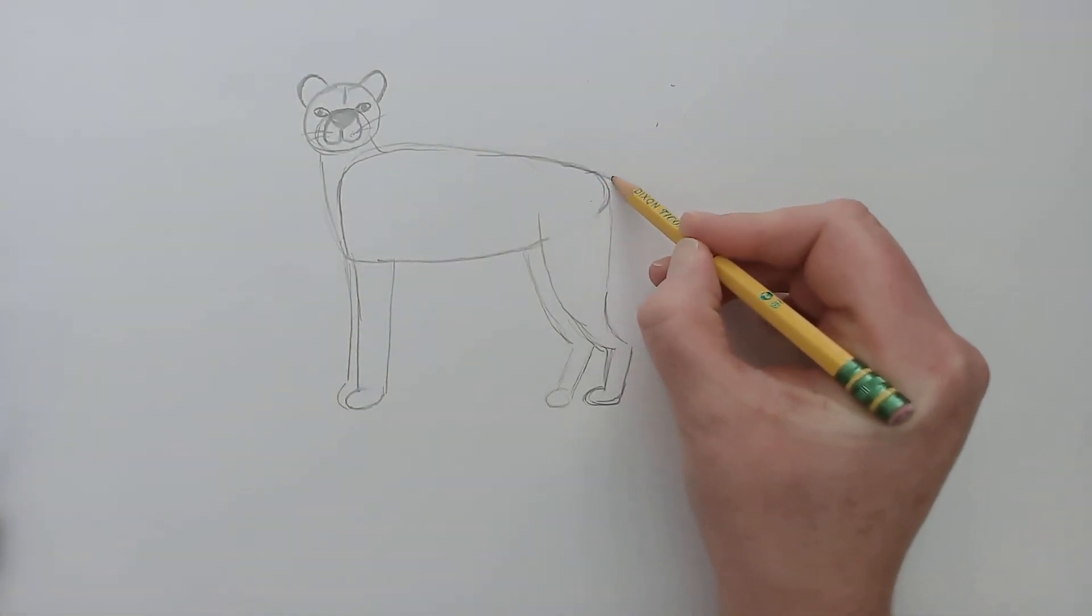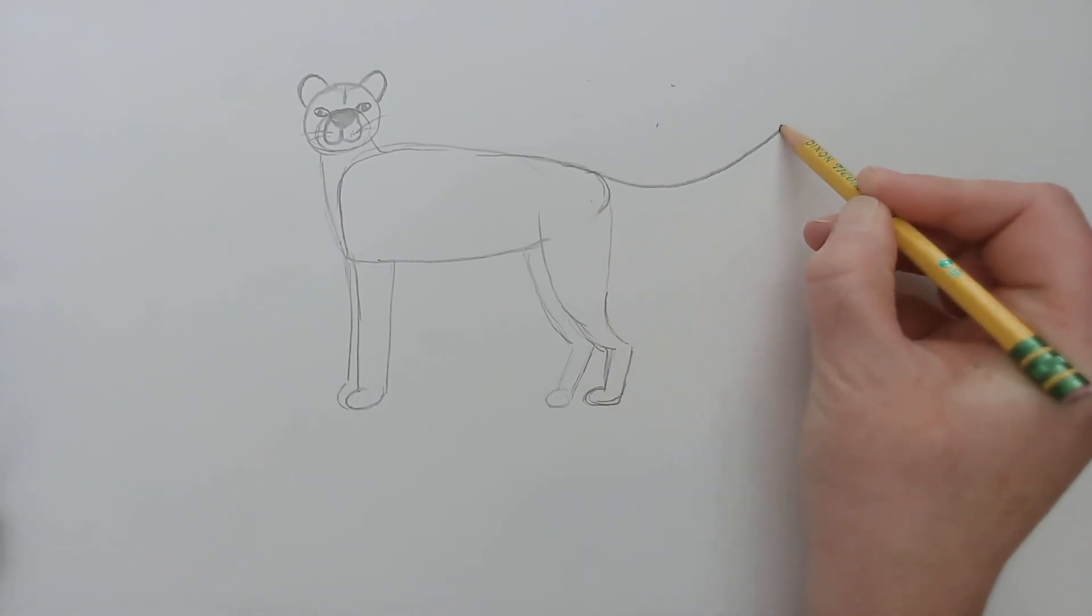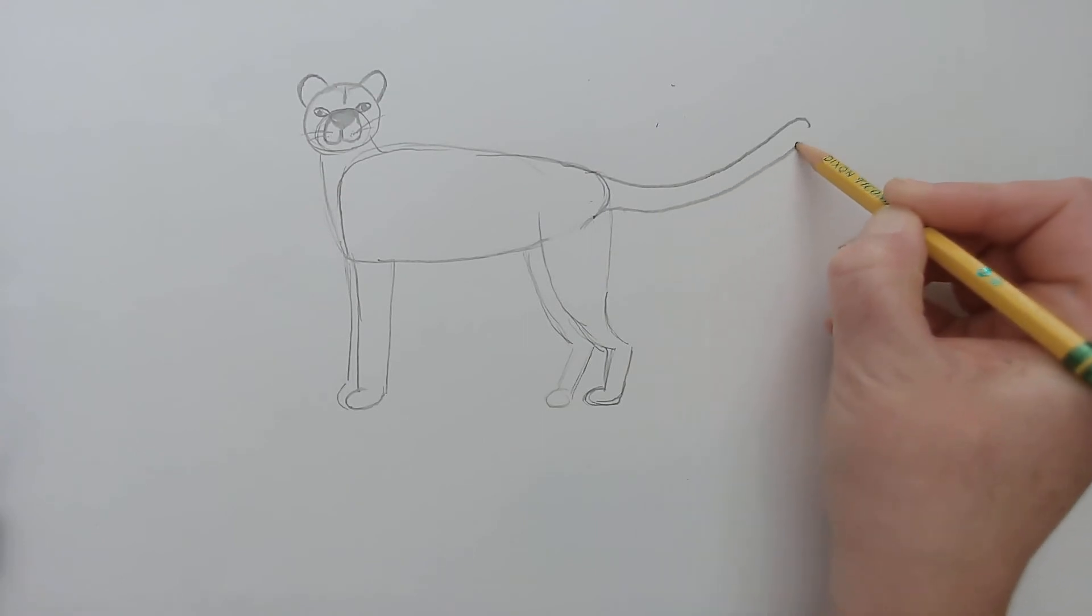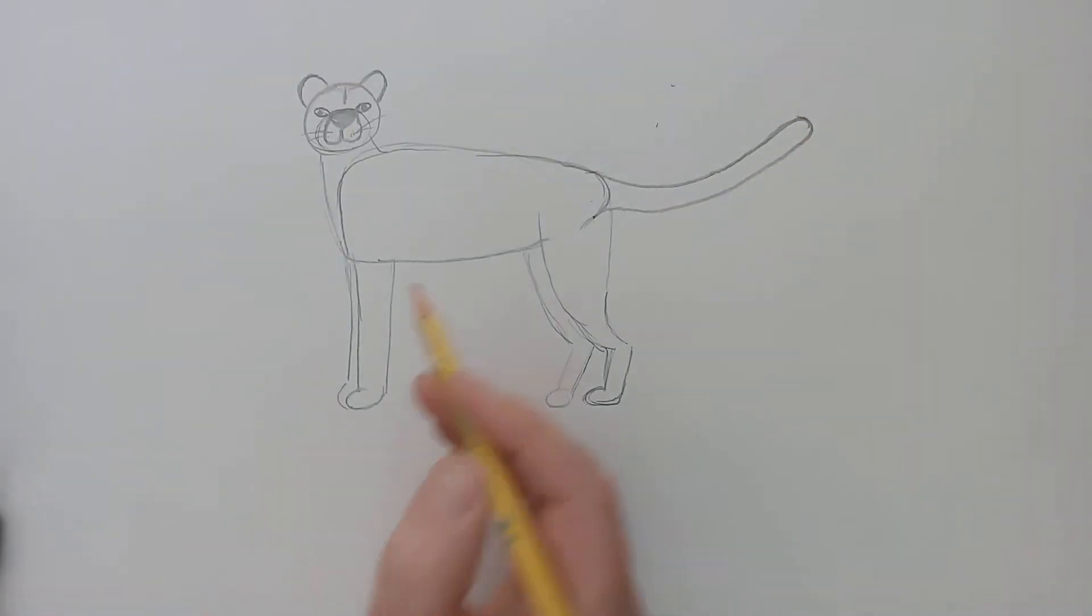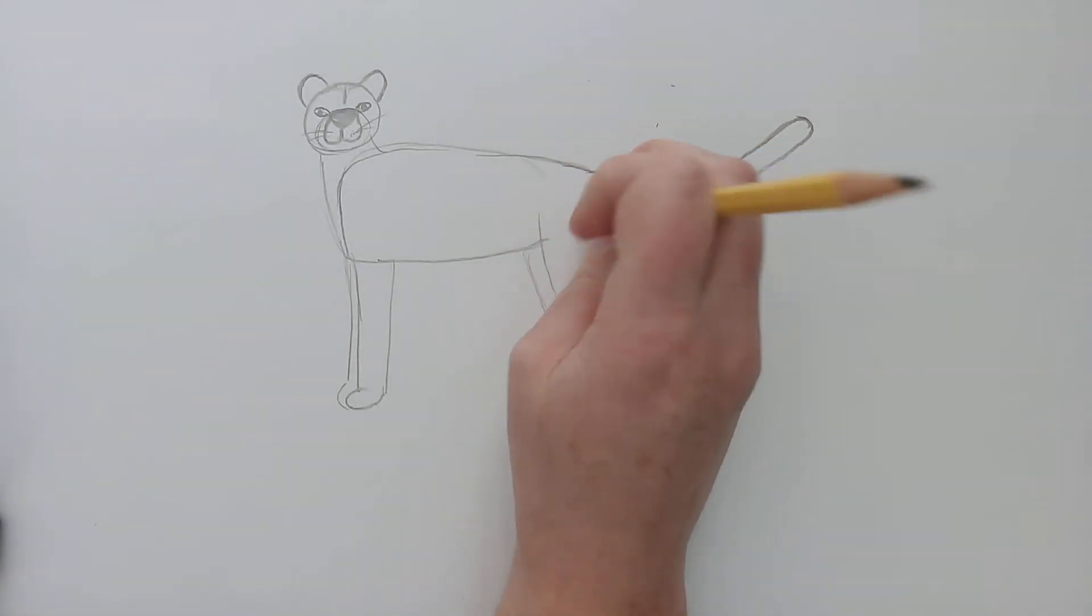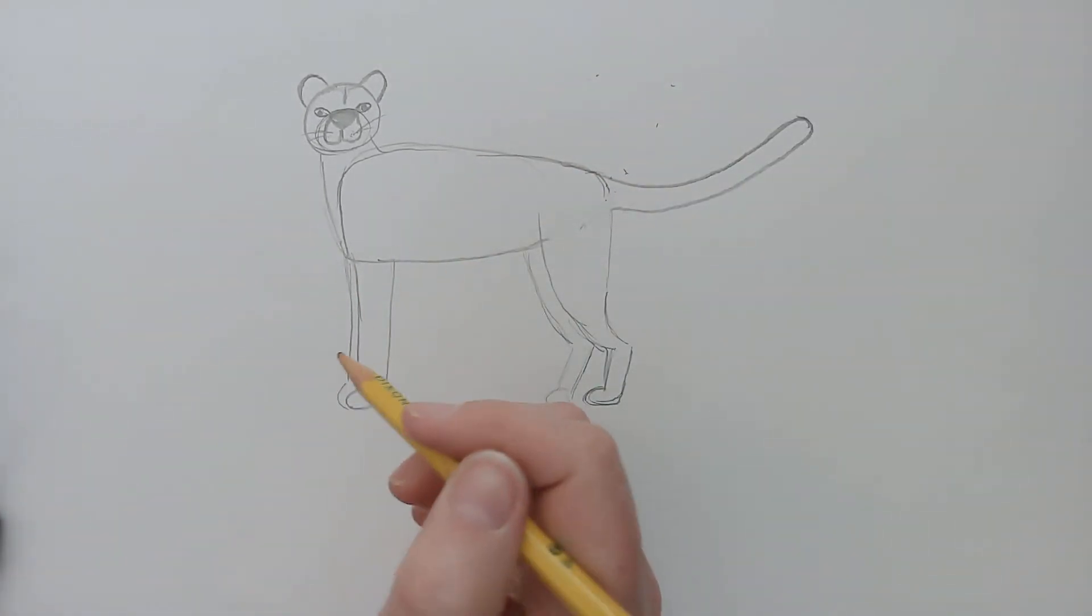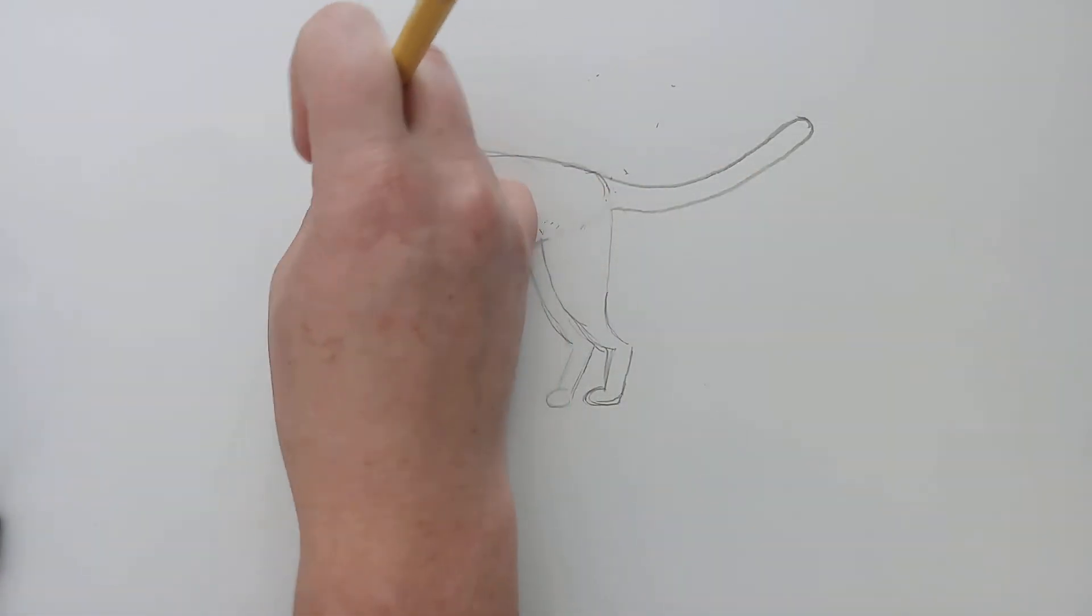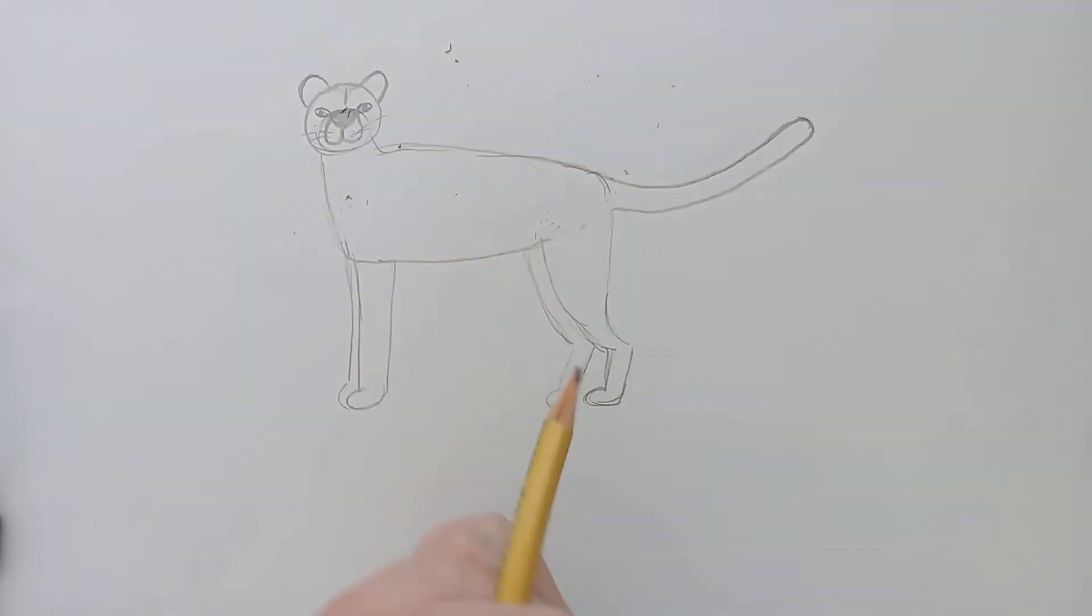I'm actually going to choose to draw the tail kind of out this way, so I'm going to make two lines that go out from here and they go all the way to the end and then they curve around. It gets a little bit wider at the end, the cheetah's tail does. After you get all of those shapes, then it will be time to add your details. So once you're ready to add your details, I would erase where you have some of these shapes still going together. You can erase some of this.